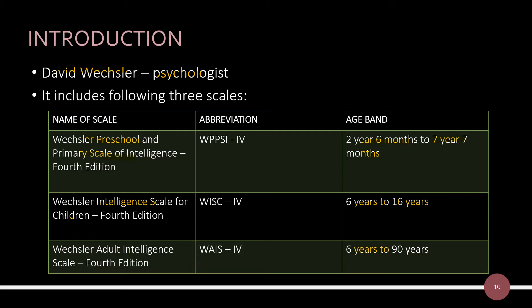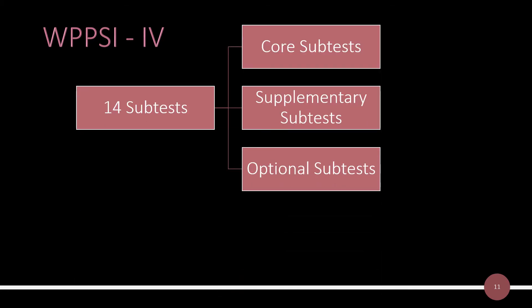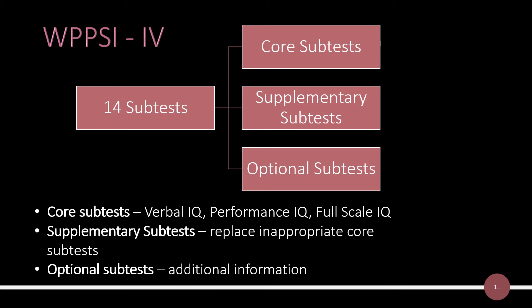These are the abbreviations for each scale: WPPSI-4, WISC-4, and WAIS-4. WPPSI-4 has 14 subtests. Out of these 14 subtests, some are core subtests, some are supplementary subtests, and the rest are optional subtests. The core subtests are used to measure verbal IQ, performance IQ, and full-scale IQ. The supplementary subtests are used in place of core subtests when a particular core subtest is inappropriate for the child. Optional subtests provide additional information about cognitive functioning but cannot be used to replace the core subtests.